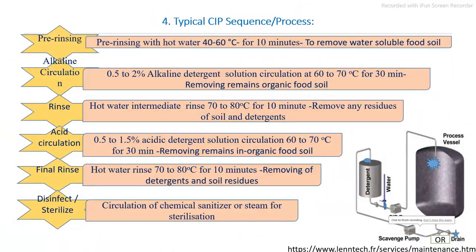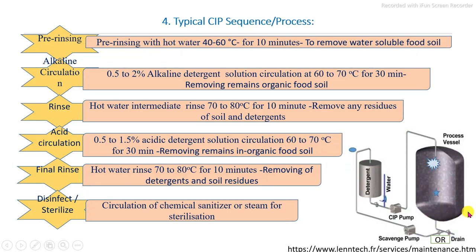In the CIP cleaning process, whatever the processing equipment — in this photo you can see a processing vessel — this processing vessel cleaning is carried out by the CIP system, in which hot water, detergent, and sanitizers are continuously sprayed inside the processing vessel to remove the food soil present internally through the typical CIP sequence cleaning process.